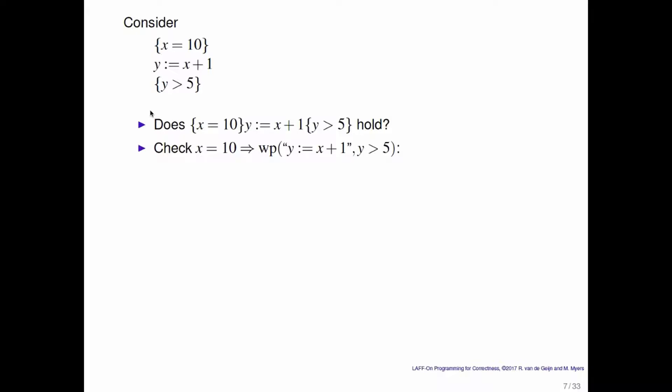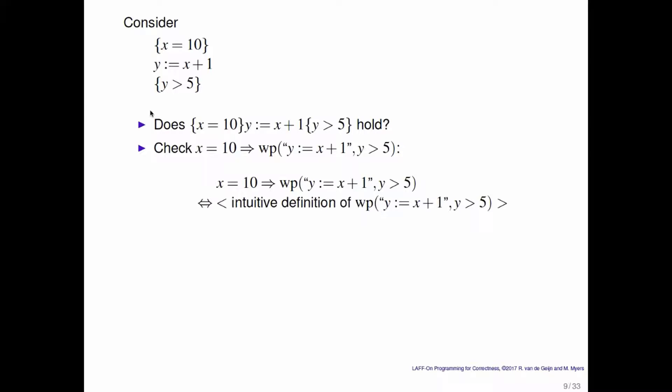That's the whole idea behind the weakest precondition. The question you need to ask is: does x equals 10 imply the weakest precondition of y := x + 1 leaving you in a state where y is greater than 5? We concluded that the weakest precondition in this case was x is greater than 4. Only if x is greater than 4 will computing y := x + 1 leave you in a state where y is greater than 5. So all we have to do now is verify that implication.